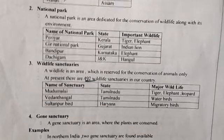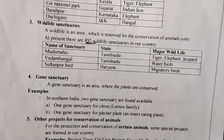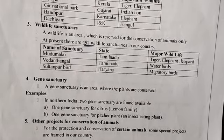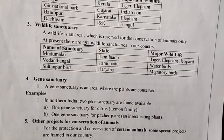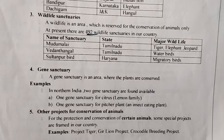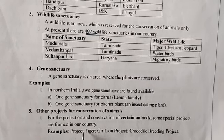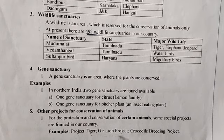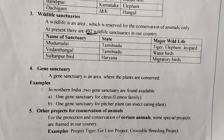Next, gene sanctuaries — where plants are being conserved. In North India, two gene sanctuaries are found: one for citrus and another for pitcher plants. Other projects for conservation of animals include Project Tiger, Gir Lion Project, and the Crocodile Breeding Project.